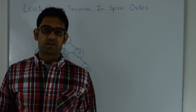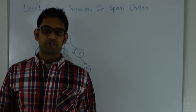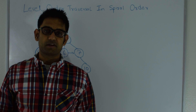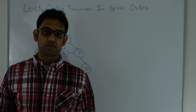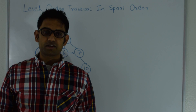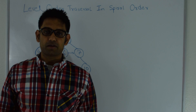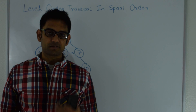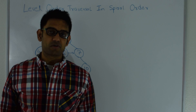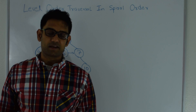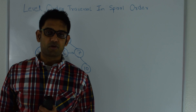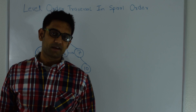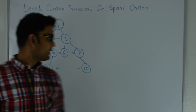Hello friends, my name is Tushar and today I'm going to discuss the question: level order traversal in spiral order. The question is: given a binary tree, the first level should print from left to right, the second level should print from right to left, the third level should print from left to right, and so on.